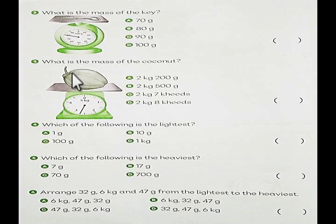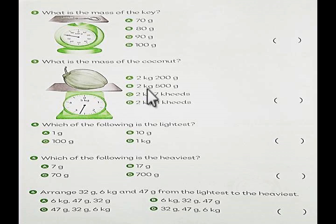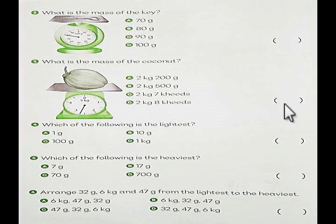Number 3. What is the mass of the coconut? Look at the pointer. A: 2 kilograms 200 grams. B: 2 kilograms 500 grams. C: 2 kilograms 700 grams. D: 2 kilograms 800 grams. Choose A, B, C, or D. Remember: 100 grams is equal to 1 unit. If you have 200 grams, that is 2 units.